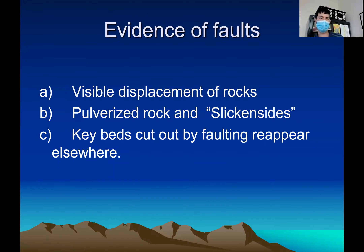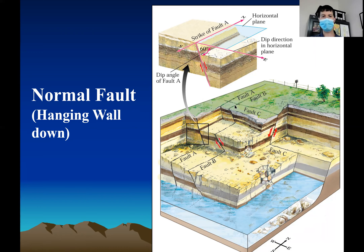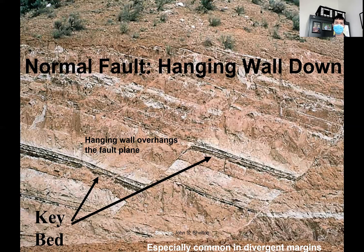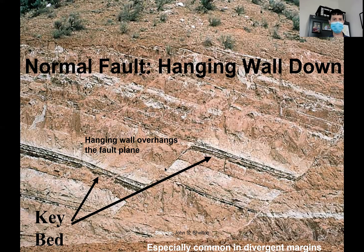Evidence of faults includes displacement of rocks, pulverized rocks, and key beds that are cut. A key bed is an important marker layer. Here's an example of a normal fault — the ground is sinking, and this is the hanging wall going down the foot wall. See that black stripe right here? And there's another one down there — at one point those black stripes were in line with each other, but when the fault occurred the ground sunk down. This is a normal fault because that key bed fell down into the ground. The key bed helps us keep track of where the ground has been.